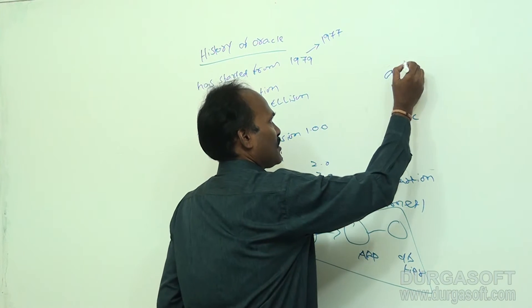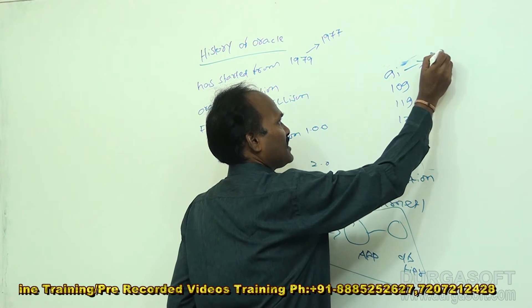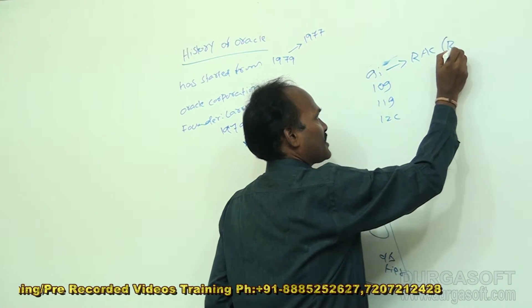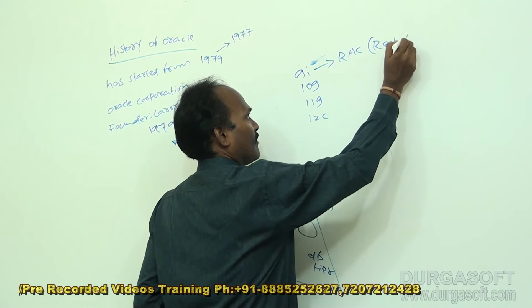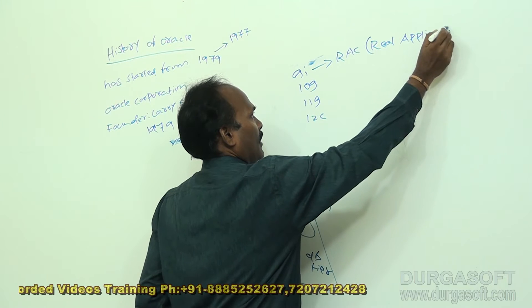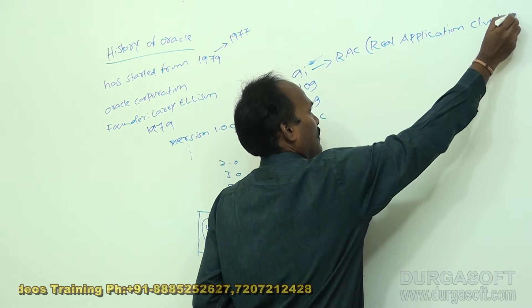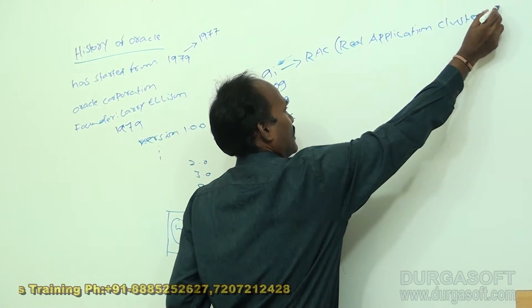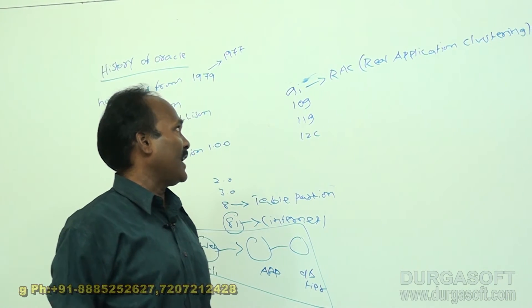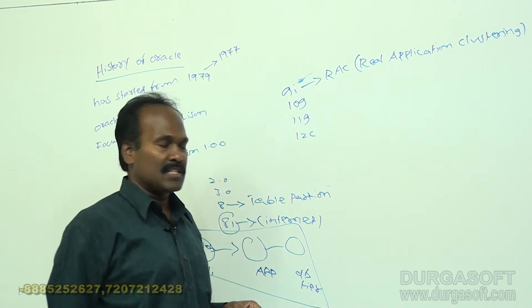In Oracle 9i, a powerful concept called RAC — Real Application Clustering — was introduced. Before the arrival of 9i, people were dealing with only one database engine. Imagine a single database server providing only a single instance.